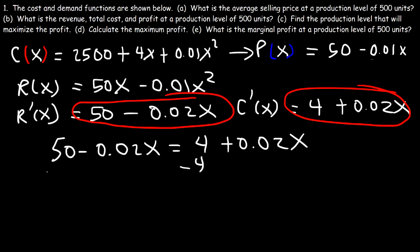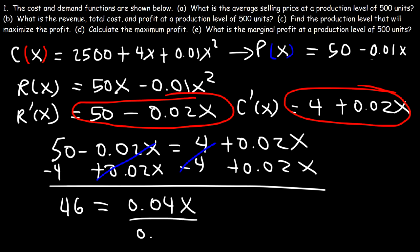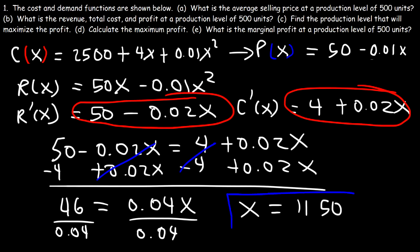Setting them equal: 50 minus 0.02x equals 4 plus 0.02x. Subtracting 4 from both sides and adding 0.02x to both sides: 46 equals 0.04x. Dividing both sides by 0.04 gives x = 1150. This is the production level that will maximize the profit — the company needs to sell 1,150 units to receive the most profit possible.